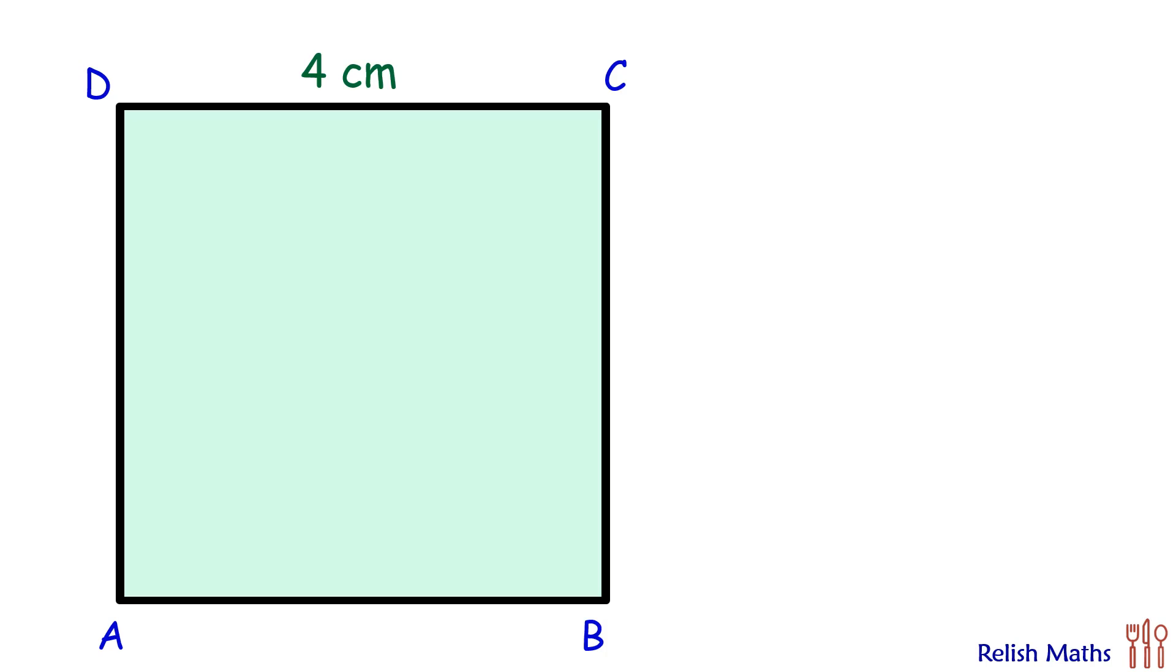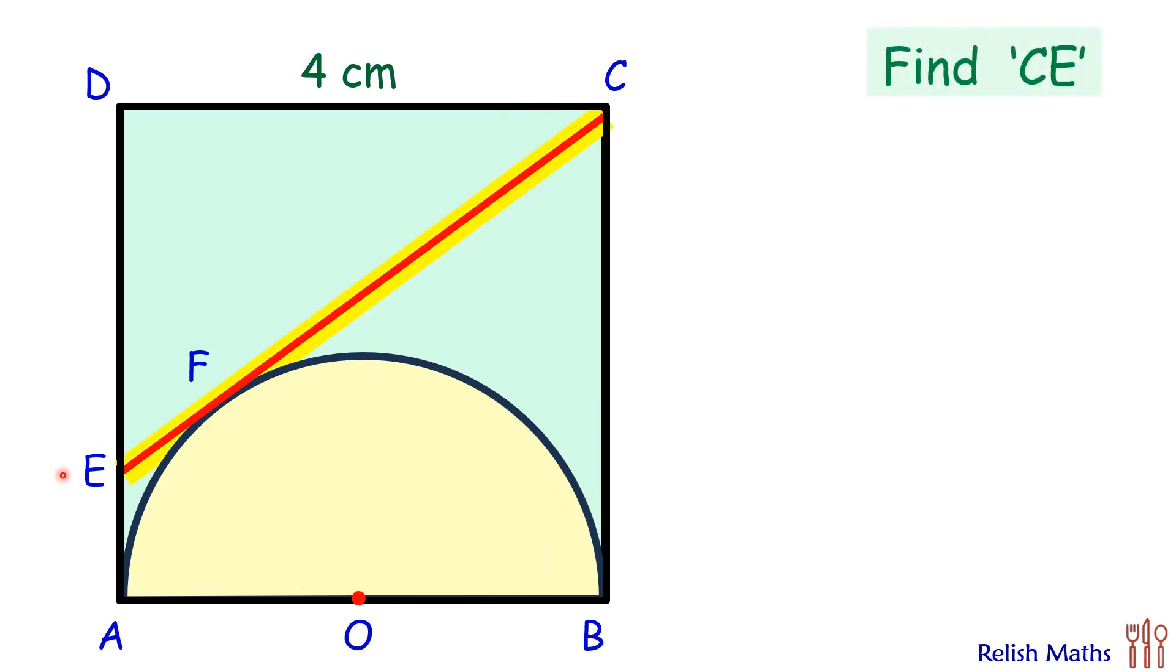In today's question, given is ABCD is a square with side length 4 centimeters. With AB as diameter, we are drawing a semicircle. From point C, we are drawing a tangent to the semicircle. Using this data, we have to find what is the length of CE.